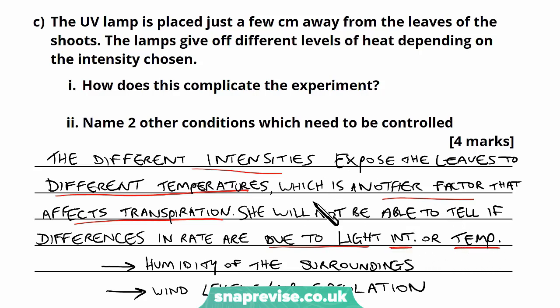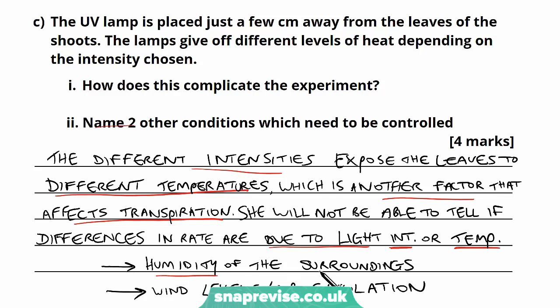That's how the heat from the lamps complicates the experiment. The next part asks to name two other conditions which need to be controlled — basically two other factors that affect transpiration that must be kept the same. One of those is humidity of the surroundings, which is one mark. And the other is wind levels or air circulation, which is another mark.